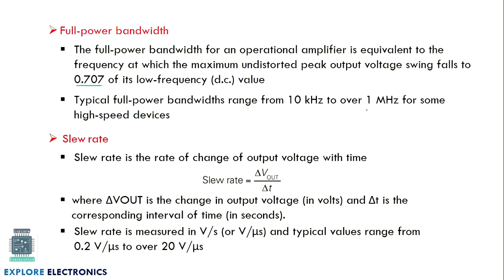Then slew rate. Slew rate is the rate of change of output with respect to time — delta V_out over delta time. Slew rate is measured as volts per second, or we take volts per millisecond or microsecond. This value ranges from 0.2 volts per microsecond to over 20 volts per microsecond.